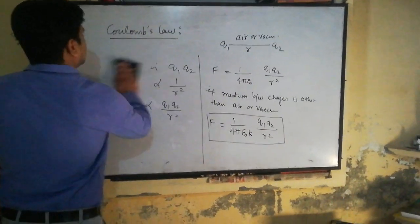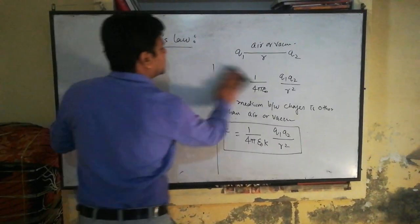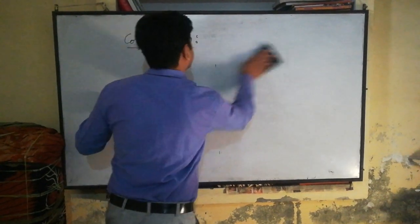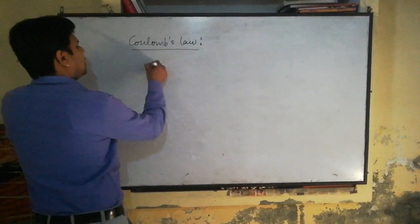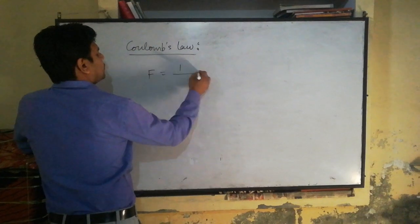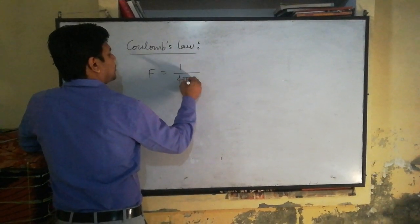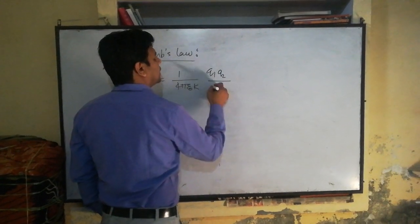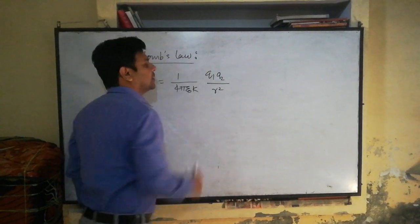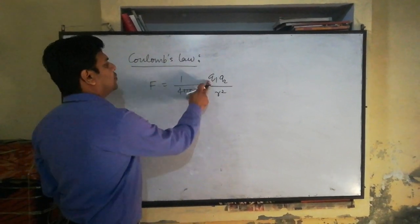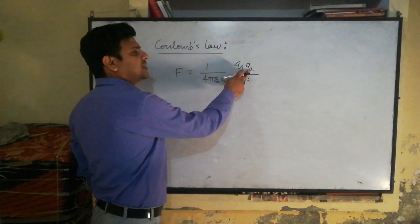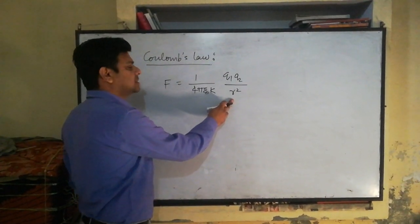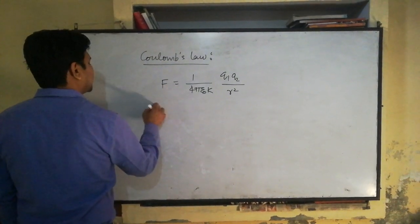Now I am going to explain the meaning of the symbols in this formula. F equals 1 over 4π ε₀ times Q1 Q2 over R squared. Here, Q1 and Q2 are the magnitudes of the charges, R is the distance between both charges, and ε₀ is the permittivity of free space.